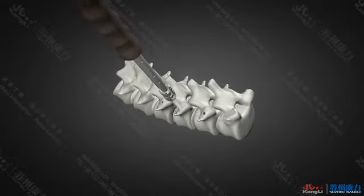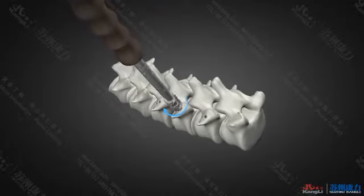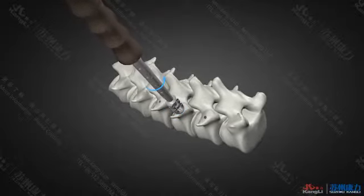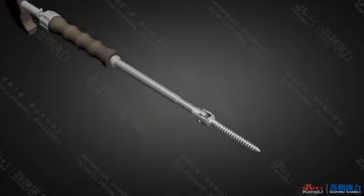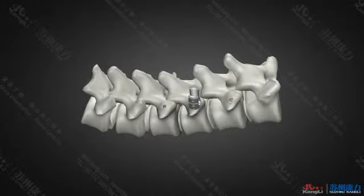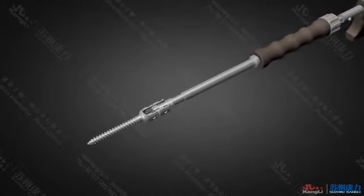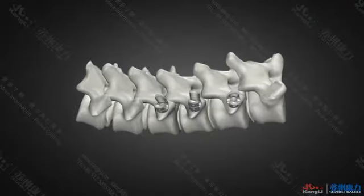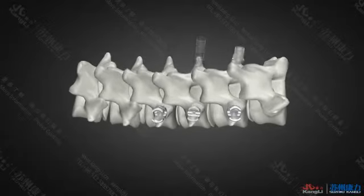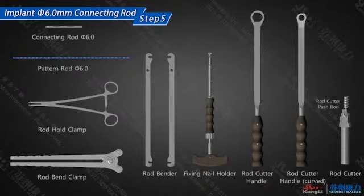Wrench through the implementation hole clockwise with proper speed and angle. After implantation, remove the nail holder. Repeat the above to install the U-type pedicle screw and U-type break-off screw. Finish the implantation of all other pedicle screws.